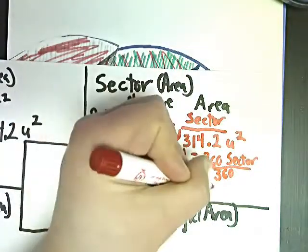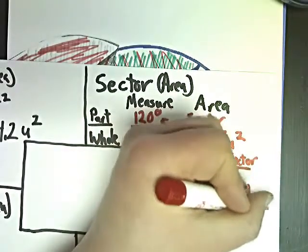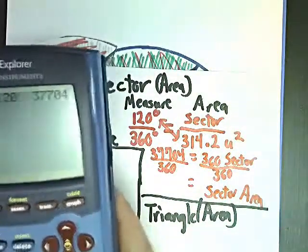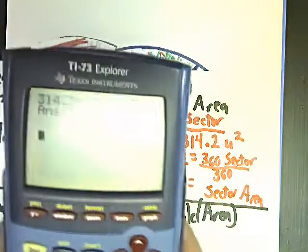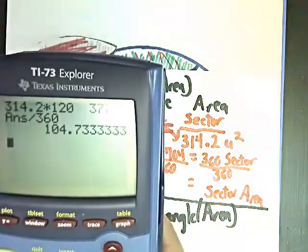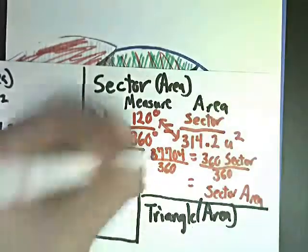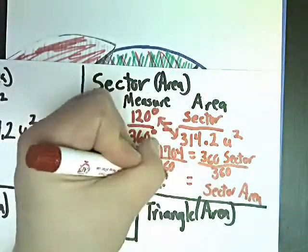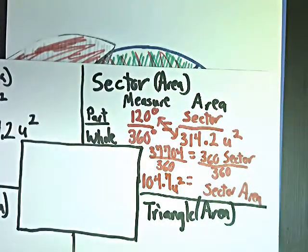So my sector area is equal to 37,704 divided by 360. So 104.73, so I'm going to round that to 104.7, and that's going to be unit squared. So 104.7 unit squared.